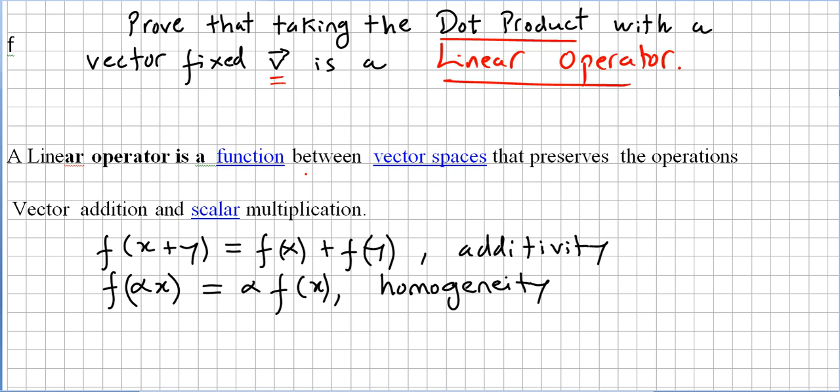Okay, let me say this in a simple way. This is a course for basic linear algebra, so let us forget the modules and all that sort of stuff. A linear operator is a function between vector spaces that preserves the operations vector addition and scalar multiplication.